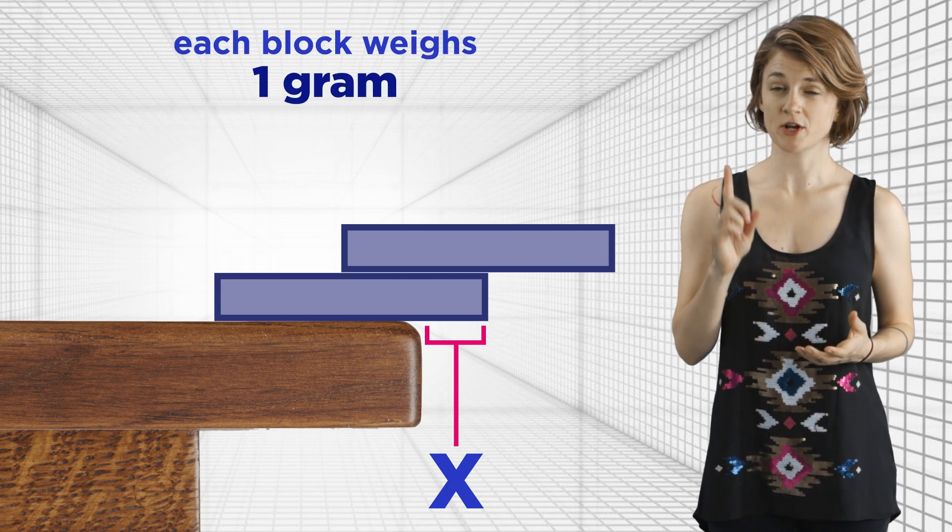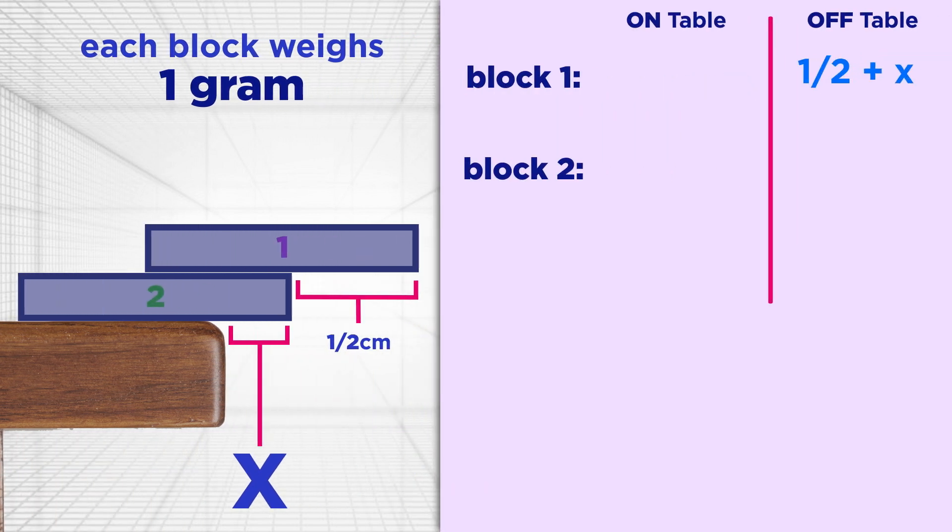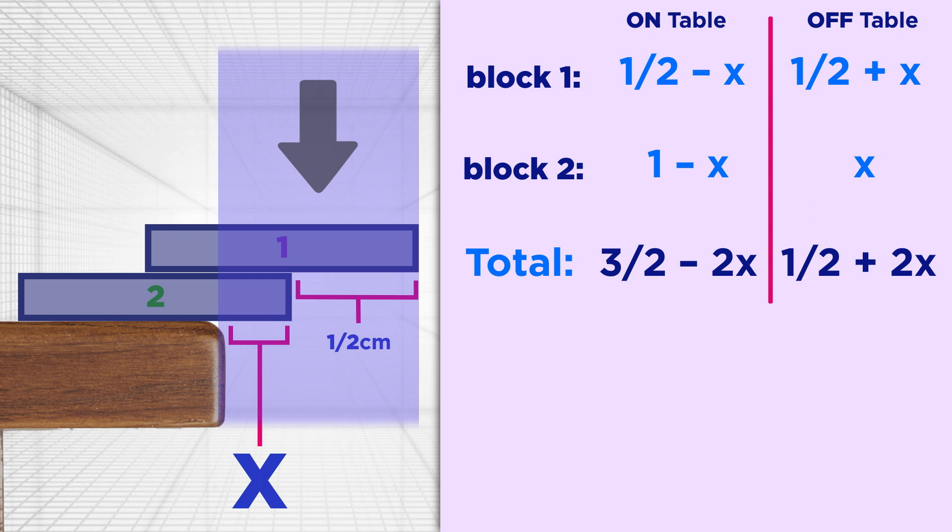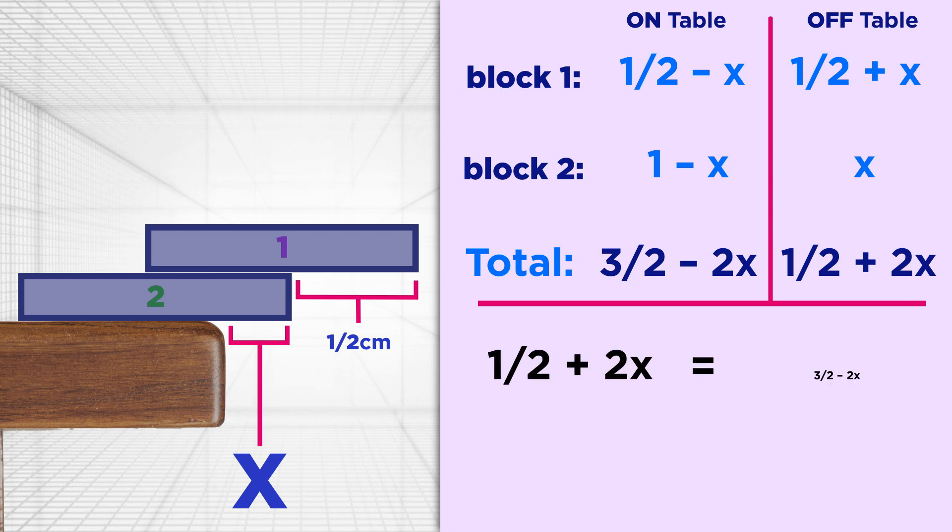We'll assume each block weighs 1 gram. The first block has ½ plus x grams past the table and ½ minus x grams over the table. This means that in total, there's 1½ plus 2x grams past the table and 3⁄2 minus 2x grams over the table. To make the center of mass exactly at the edge of the table, the mass past the table should be equal to the mass over the table. So 1½ plus 2x should equal 3⁄2 minus 2x. With a little algebra, we can see that this happens when x equals 1 quarter.